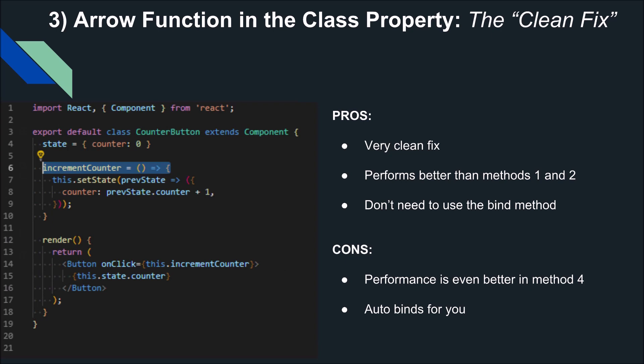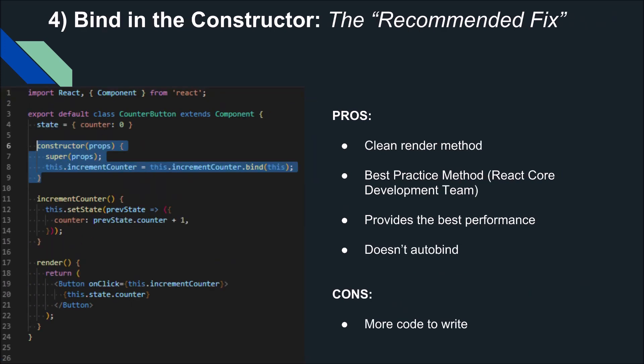This is a very clean fix: you define increment counter using the ES6 arrow function syntax as a class property. It's nice because it's really clean, it performs much better than the previous two methods because it's not happening in the render method, and you don't have to use the bind method either. A con is that it automatically binds things for you. The method I'm about to show you is the best practice way encouraged by the React documentation.